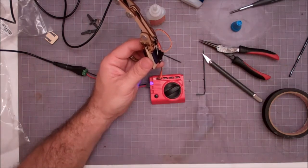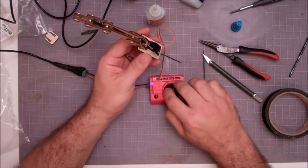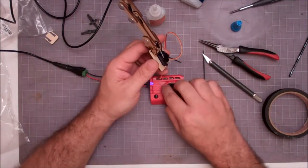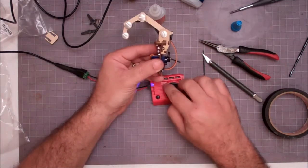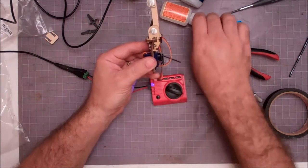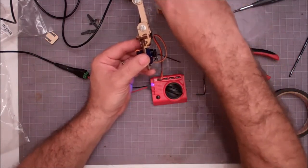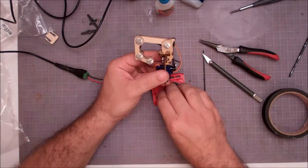We use most of the servo throw but not quite at all. So you just kind of have to be careful on where you position that horn. But you're looking for something that gives you basically a full extension in and out on both directions of the servo.